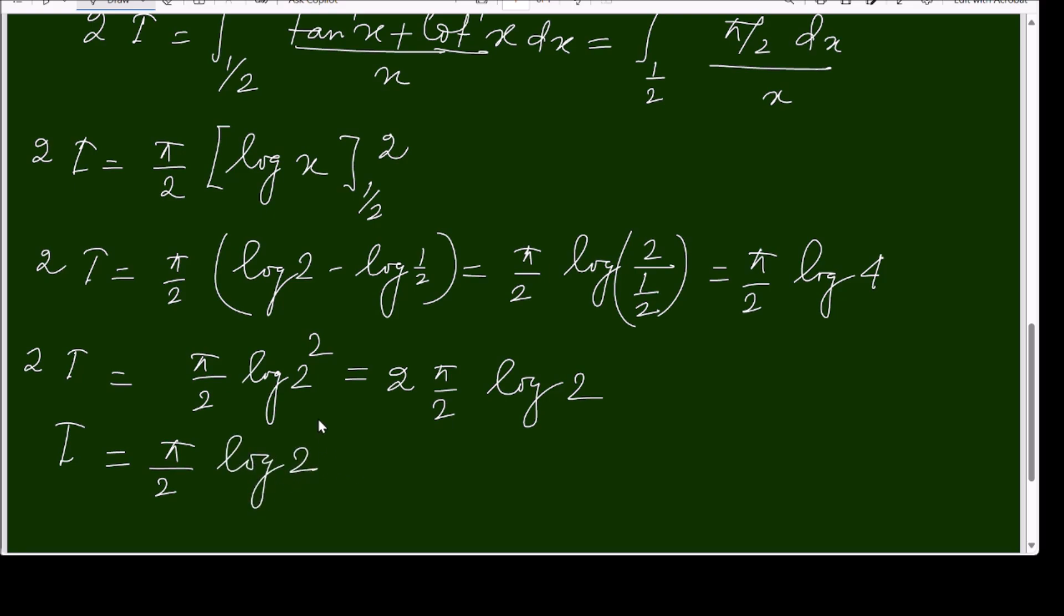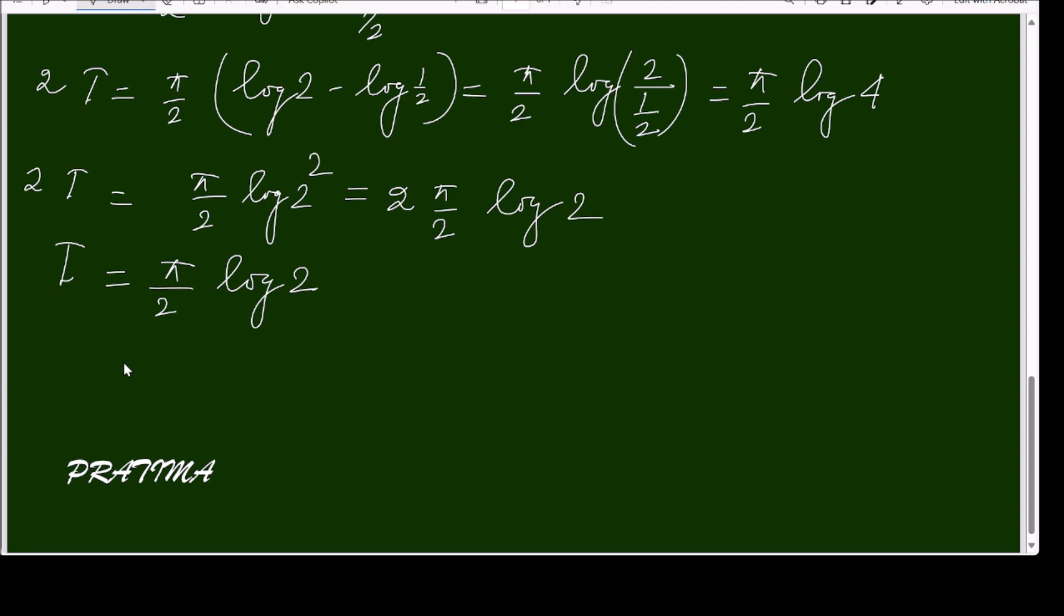This is the answer of this question. So half to 2 tan inverse x over x dx equals π by 2 log 2. Thank you for watching.